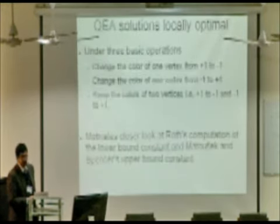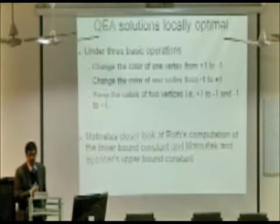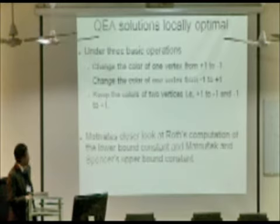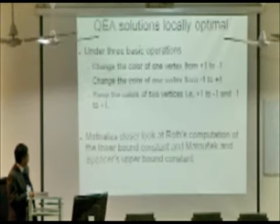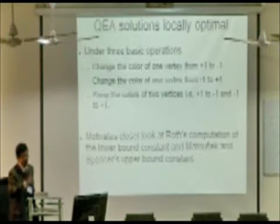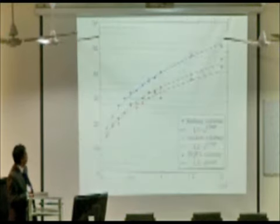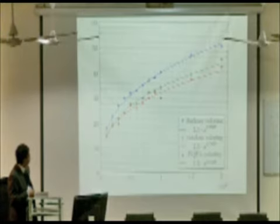Then we checked whether the solutions that we found are at least locally optimal. We can't check for global optimality because of the sheer size of the problem. So, we looked for local optimality. And yes, we did find that under all these changes, our solution is still optimal. So, it motivates a closer look at Roth's computation of the lower bound constant and the upper bound constant. Somewhere there is a gap that has to be reduced. So, that's the graphical representation. These are the kind of solutions we are finding for different graphs.